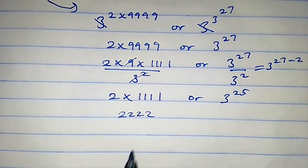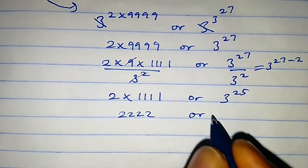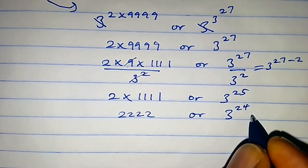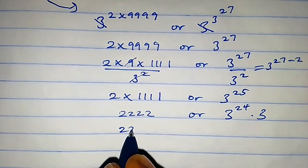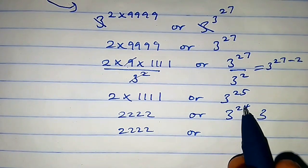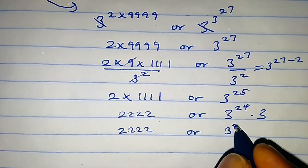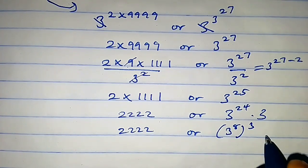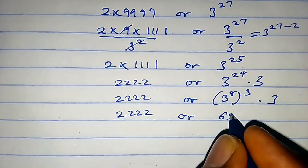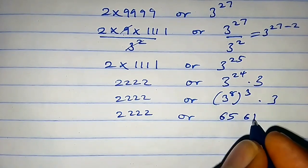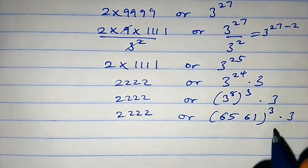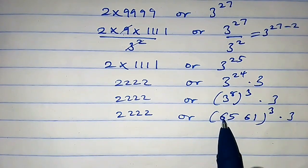We have 2^2^2^2^2, or 3 raised to the power 25. We can write 3^25 as 3^24 times 3, so 2^2^2^2^2, or 3^8 times 3. Now 3 raised to the power 8 is simply 6561, so we have that times 3, considering this base — 6561.